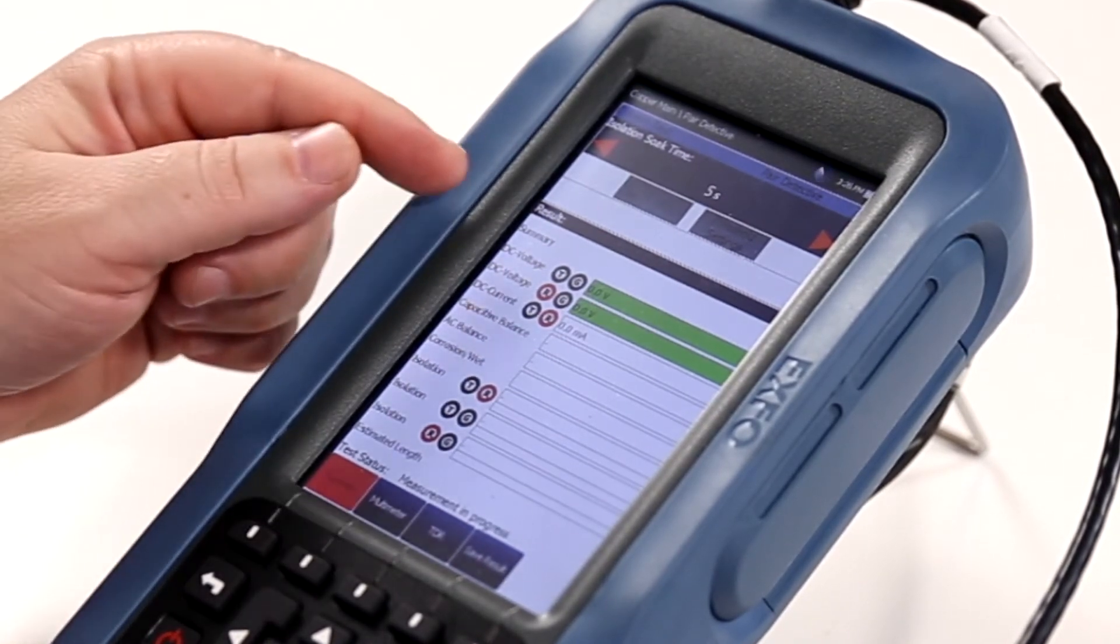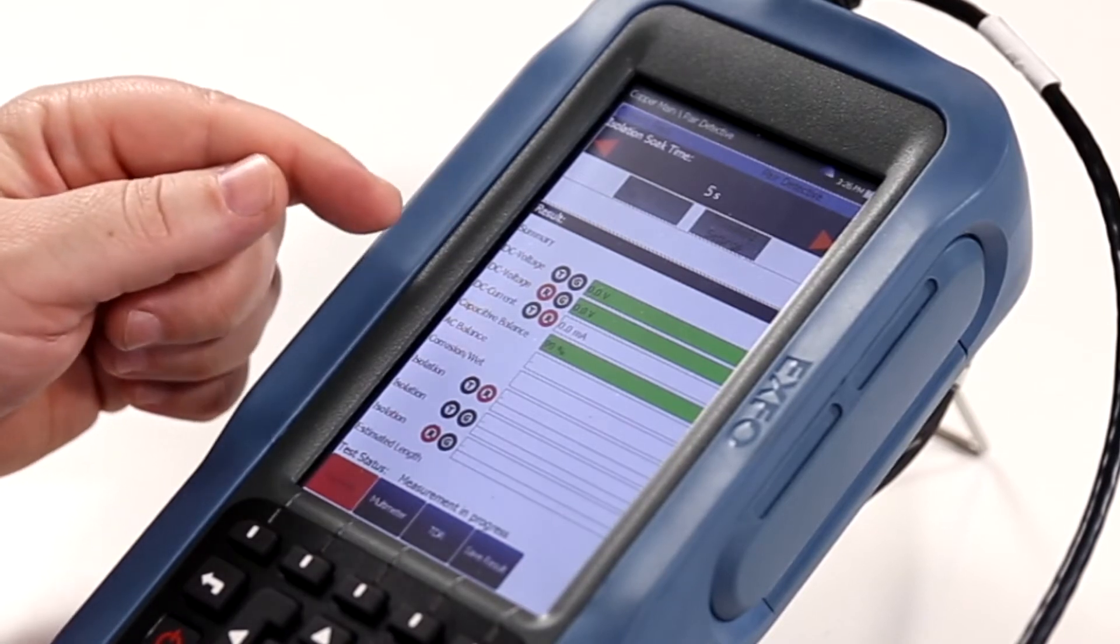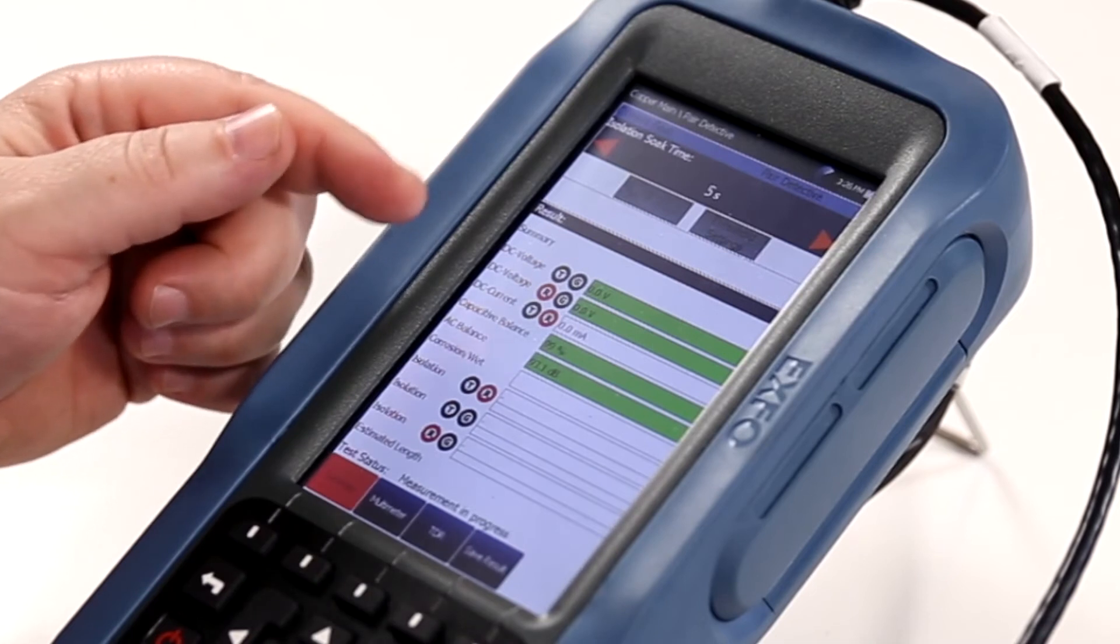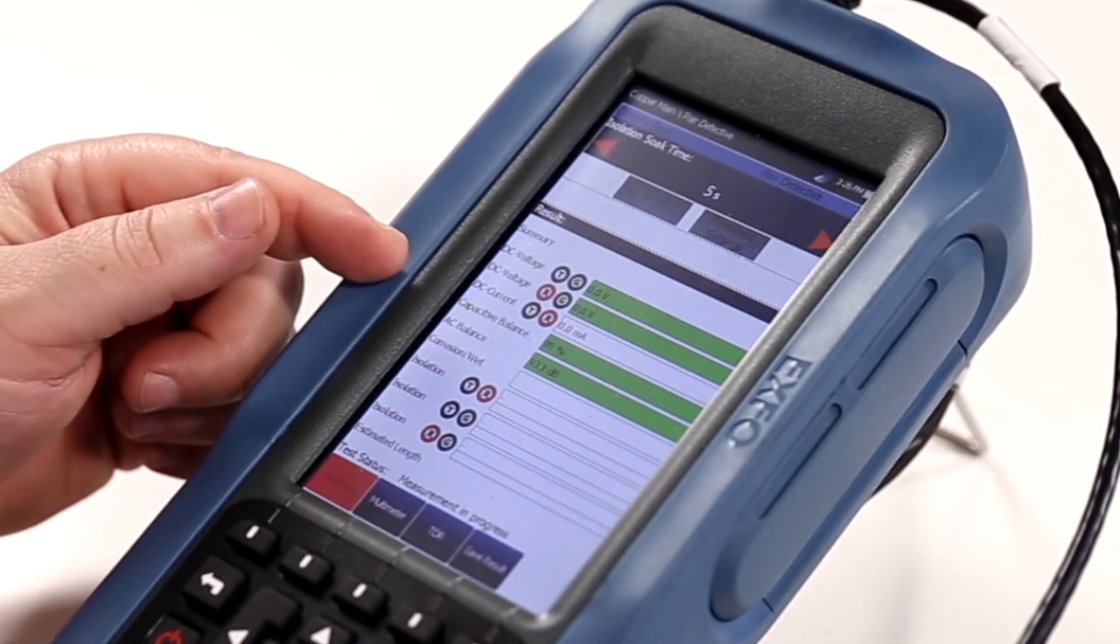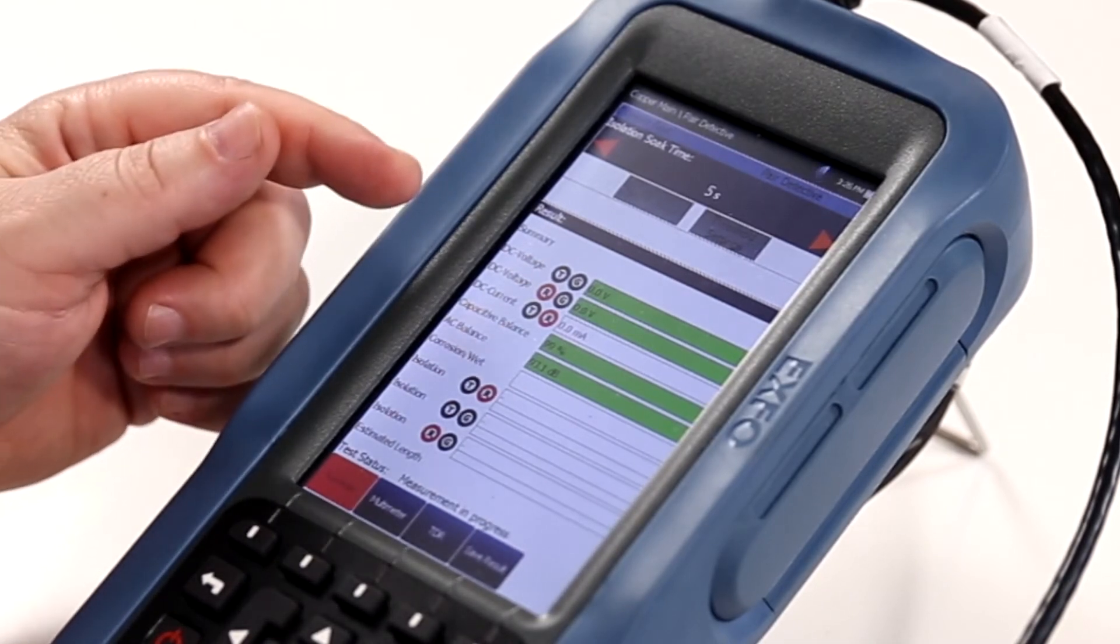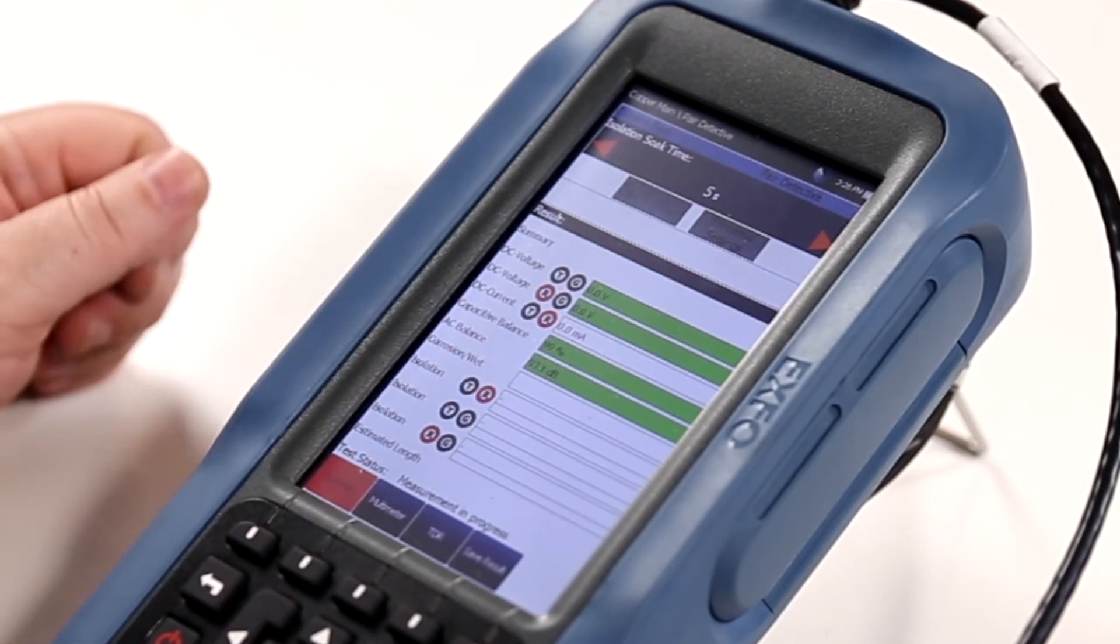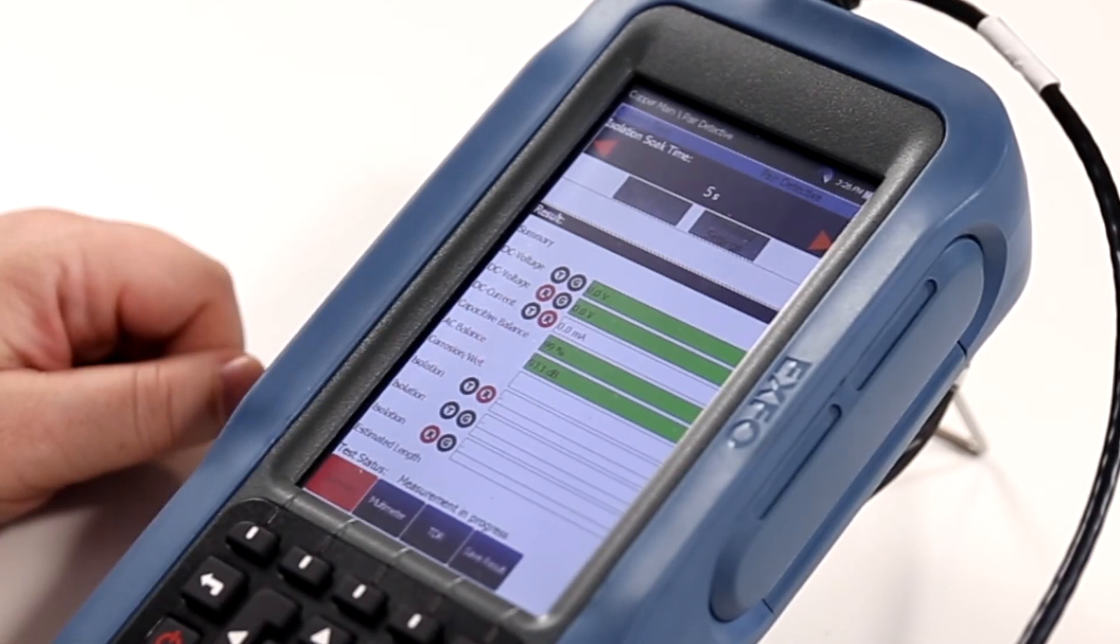As the test progresses, we're going to measure voltage, current, capacitive balance, and each one of these are graded against the measurement value and based on threshold settings, whether they pass or fail the user-defined threshold settings.